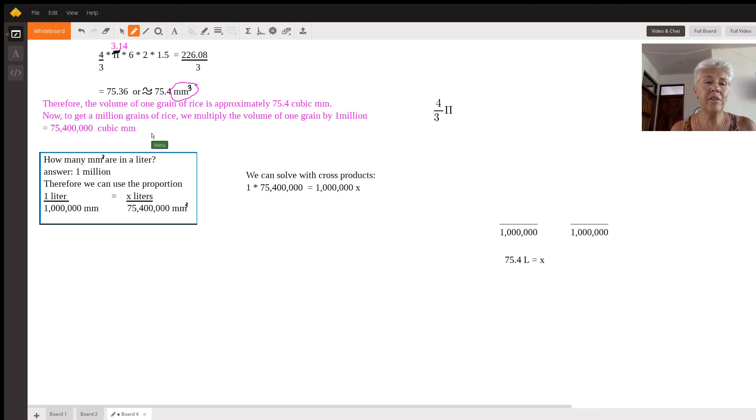So I started to think about liter bottles. Most teachers can get a hold of a liter bottle and you could pour rice into a liter bottle. So how many cubic millimeters are in a liter? Answer one million. So we could use this proportion as a conversion like we do in lots of math. So one liter is equal to a million cubic millimeters.